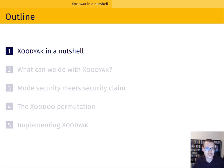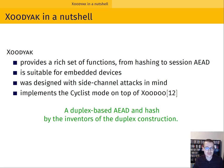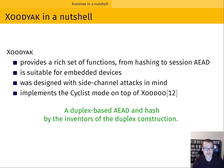What is Zodiac exactly? Zodiac is a rich API operating on a stateful object. This API allows everything from hashing to session-based authenticated encryption to be implemented. Zodiac is suitable for embedded devices and is also designed with side channel attacks in mind. Zodiac implements the cyclist mode on top of the 12-round Zoodoo permutation.